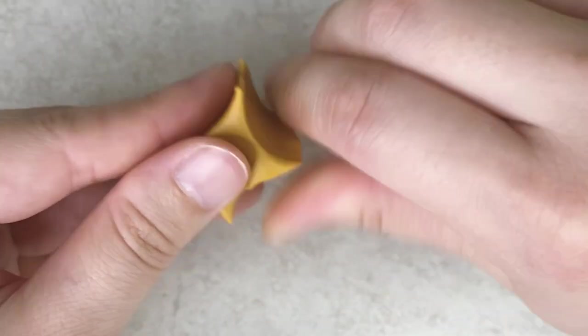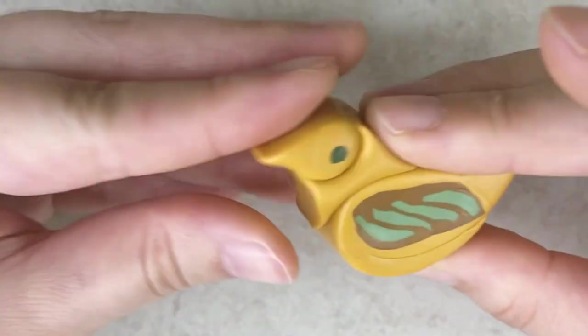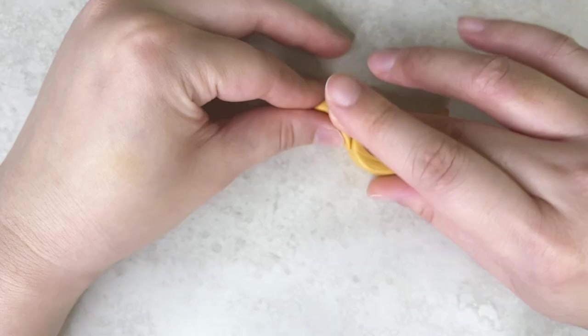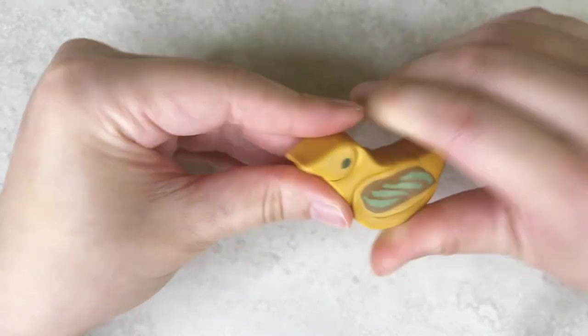After the neck is at the length and width you're happy with, fit the head and body into the curved gaps. Then compress and push to work the pieces into one another while refining the shape of the bird.